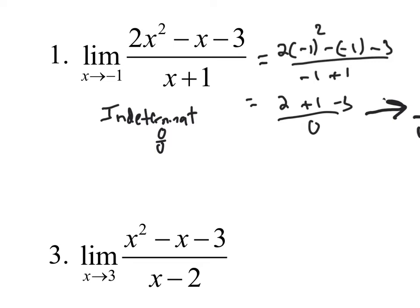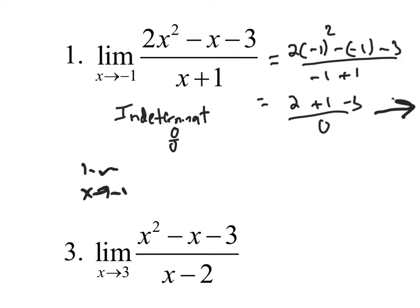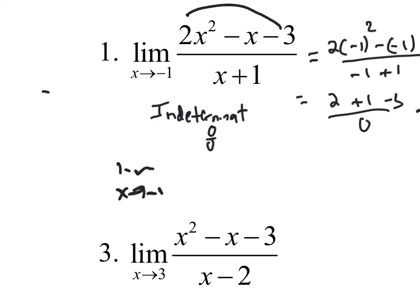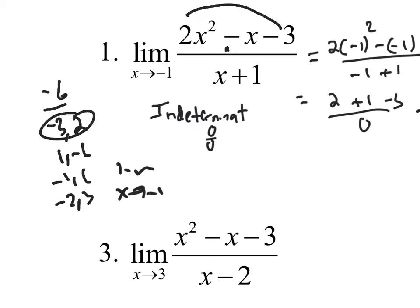If it's indeterminate, what else could we do? What else did we do in the old days? If it's a quadratic, could we try factoring? So let's try factoring 2x² minus x minus 3. 2 times negative 3 is negative 6. Factors of negative 6 that add to negative 1 — that's negative 3 and 2. That works.